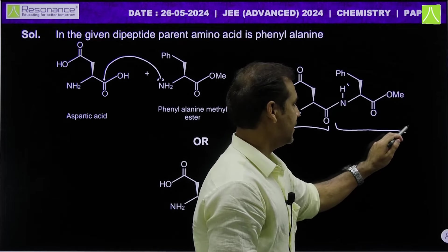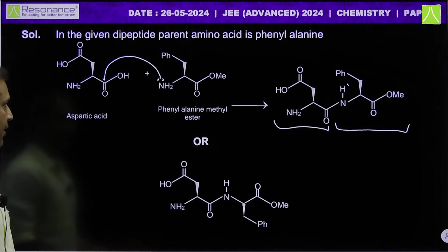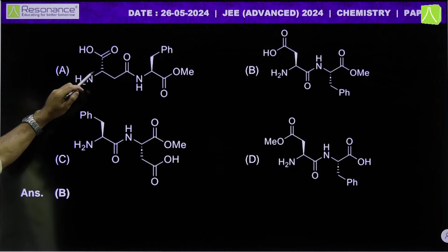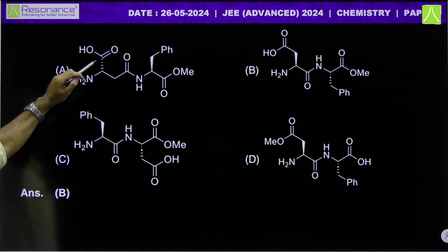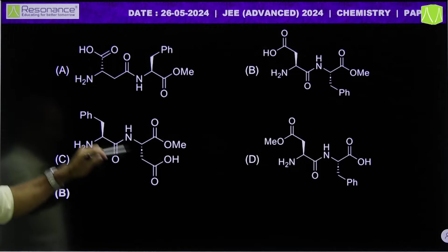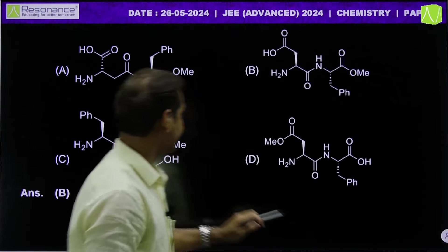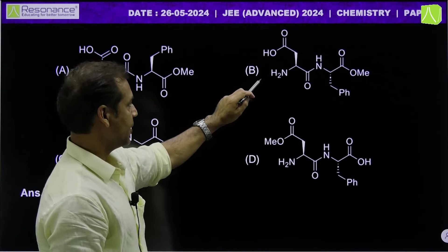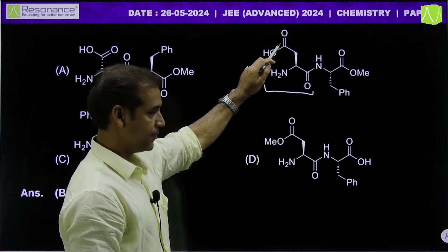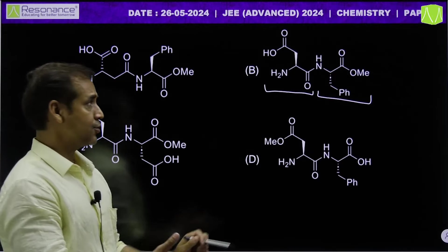Looking at the options: in aspartic acid, the alpha carbon COH should be outside. Option showing COH outside for aspartic acid and CH2Ph outside for phenylalanine — we need to check the stereochemistry. When the group goes inside the dash line and the wedge, the question's drawn structure needs to be analyzed carefully.